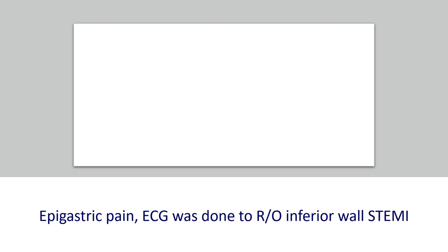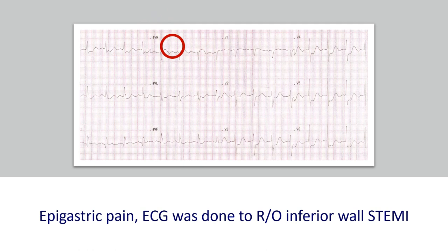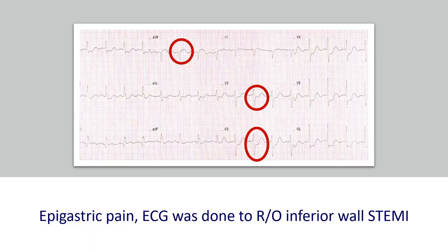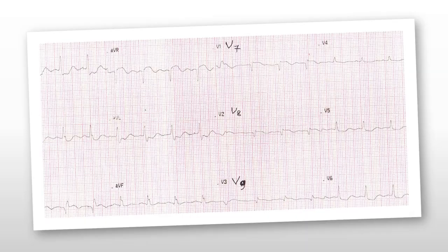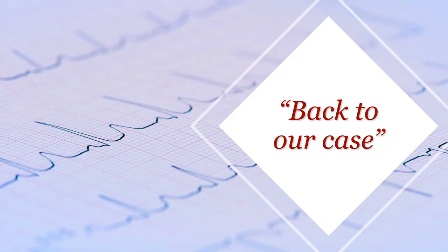Another example: a patient who presented with epigastric pain. The ECG was done to rule out inferior wall STEMI. As you can see, there is ST elevation in AVR and also in most other leads including V2 and V3. Because the R wave was a bit tall and the T wave was upright, I decided to do posterior leads — knowing I was going to activate PCI anyway due to the ST elevation in AVR. The posterior leads clearly showed ST elevation in V7, V8, and V9.